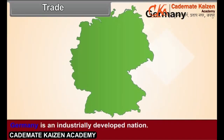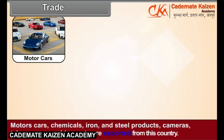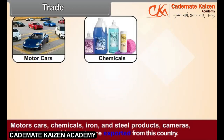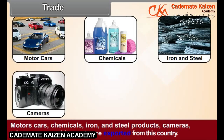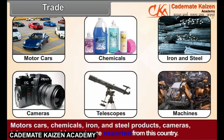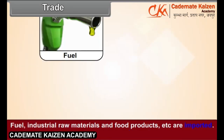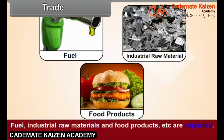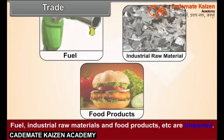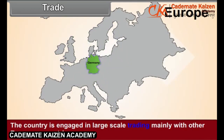Trade. Germany is an industrially developed nation. Motor cars, chemicals, iron and steel products, cameras, telescopes, machines, etc. are exported from this country. Fuel, industrial raw materials, and food products, etc. are imported. The country is engaged in large-scale trading, mainly with the other European countries.